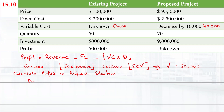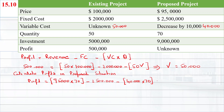Profit equals revenue: $95,000 sale price times 70 units, minus fixed cost of $2,500,000, minus variable cost of $40,000 multiplied by 70 units. So the proposed profits will be $1,350,000.